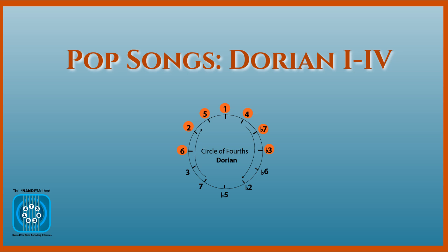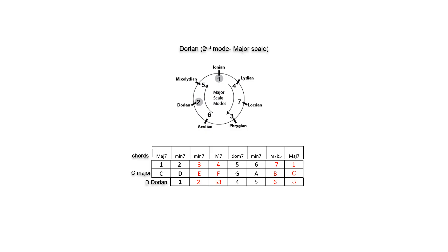In this lesson, you'll learn how to identify the 1-4 Dorian chord progression in pop songs. Of the seven major scale modes shown on the circle of fourths, Dorian is the second. D Dorian begins on the second note of C major, sharing its notes and chords.